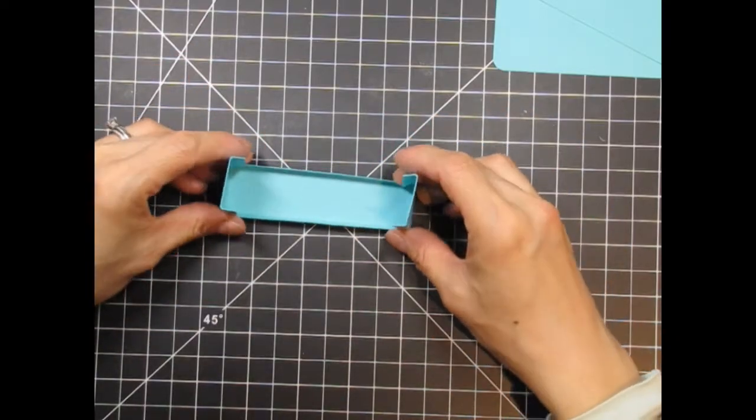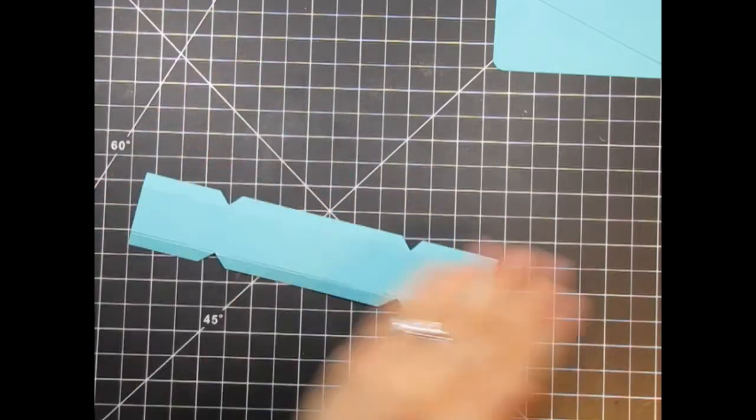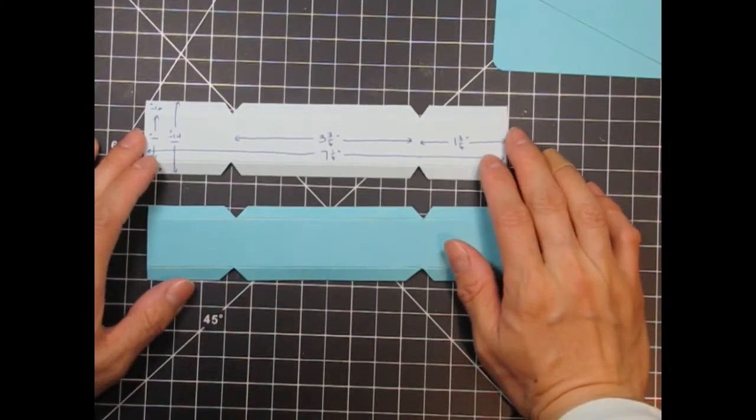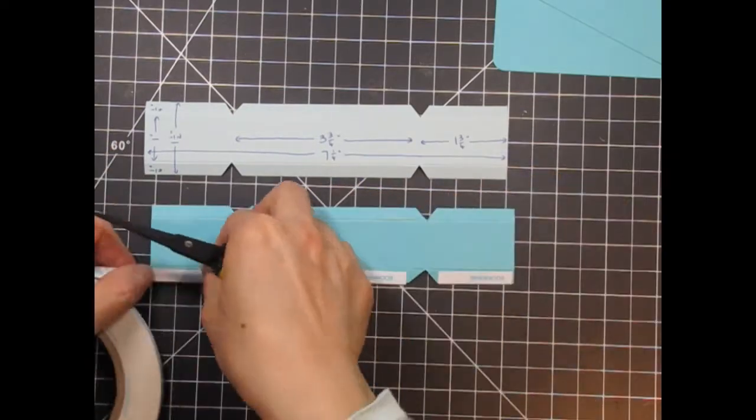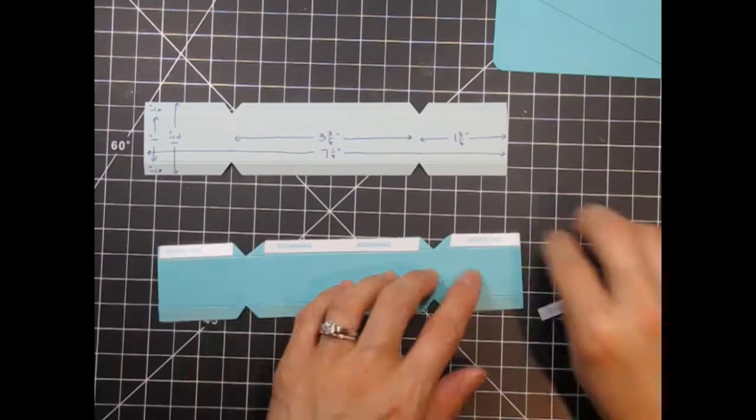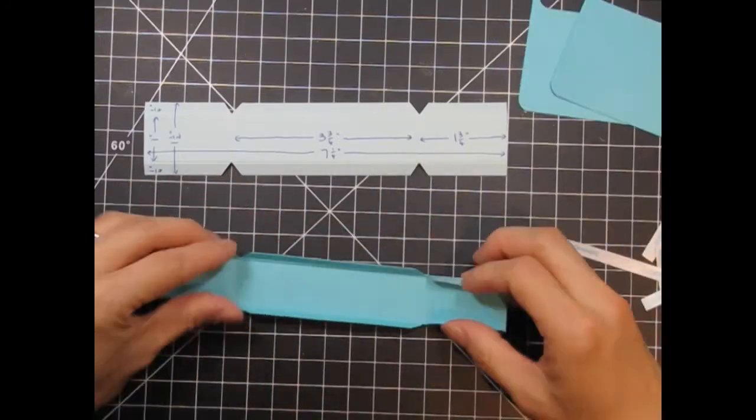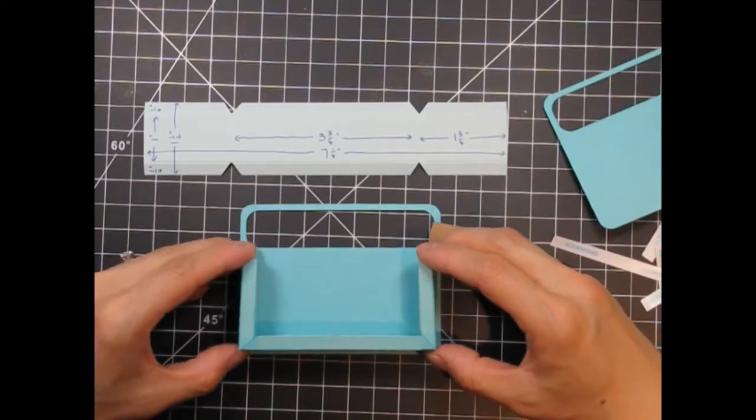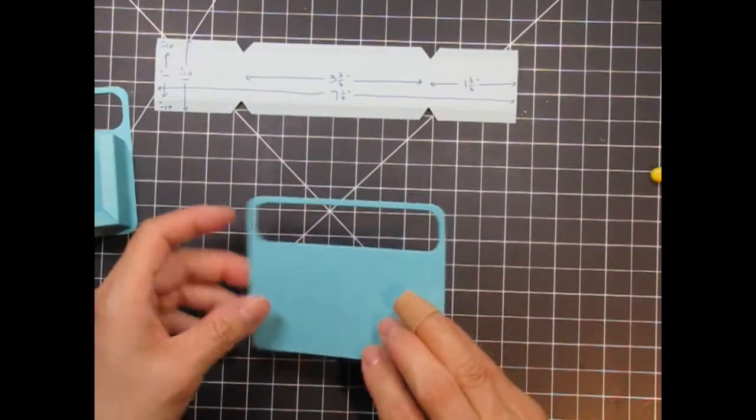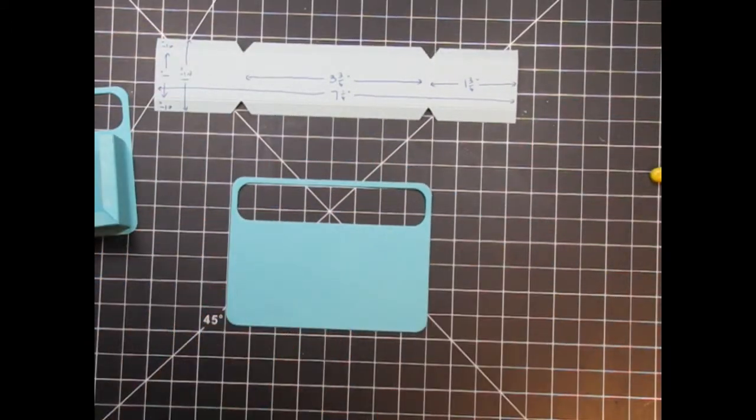I'm going to lay it flat to apply adhesive to the flaps. Here's my example so you can visualize the measurements. This size will hold several mini chocolate bars and almost every other sweet treat. I'm using very strong score tape to make sure the box stays together. Once the backing is removed, I can attach it to one side of the box. All I do is line it up with the base just a couple of millimeters off the edge and make sure the sides are parallel to the die cut.